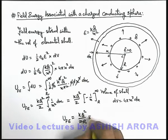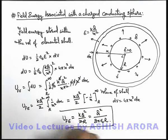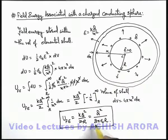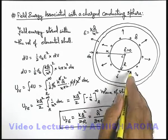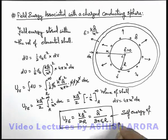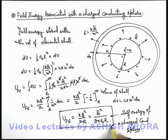Substituting the value of k, this can also be written as q²/8πε₀r. This is the standard expression for the total field energy associated with a charged conducting sphere having charge q and radius r. This field energy in the surrounding of the sphere is also called the self energy of a charged conducting sphere. In the next section, we are going to discuss the basic definition and understanding of self energy of a charged body, and correlate this expression of total field energy with the self energy of the body.